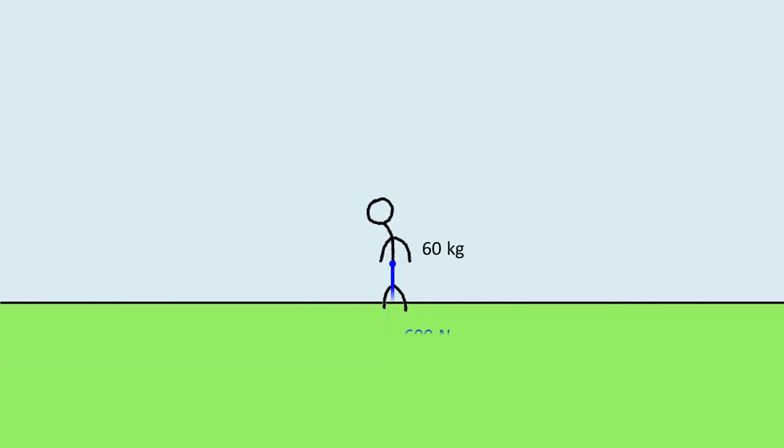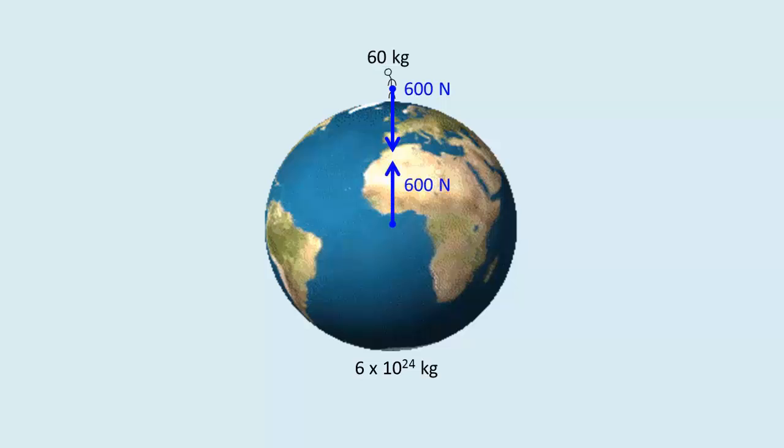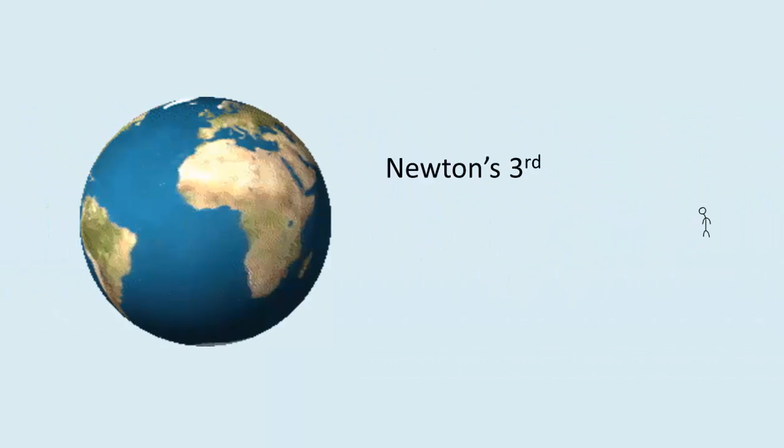If the Earth's gravitational force on a man is 600 N, the man's gravitational force on the Earth will also be 600 N. It's Newton's third law.